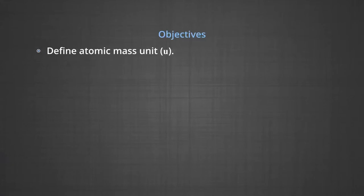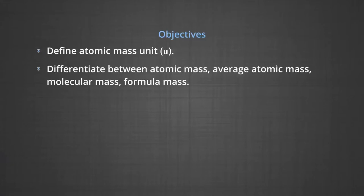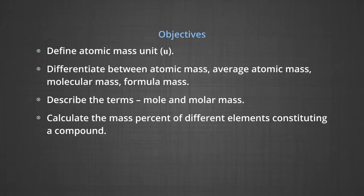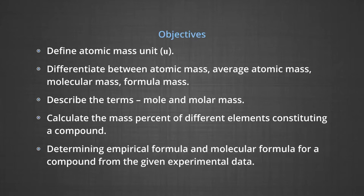After covering these contents, you will meet the following objectives: define atomic mass unit; differentiate between atomic mass, average atomic mass, molecular masses, and formula mass; describe the terms mole and molar mass; calculate the mass percent of different elements constituting a compound; and determine empirical formula and molecular formula for a compound from given experimental data.